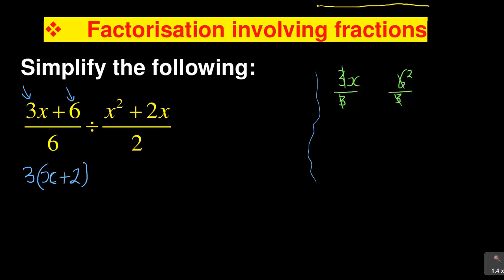Remember to check your answer by expanding: 3(x + 2) gives 3 × x = 3x and 3 × 2 = 6, which takes you back to the original. This confirms you factorized correctly. So the first part gives us 3(x + 2) over 6.